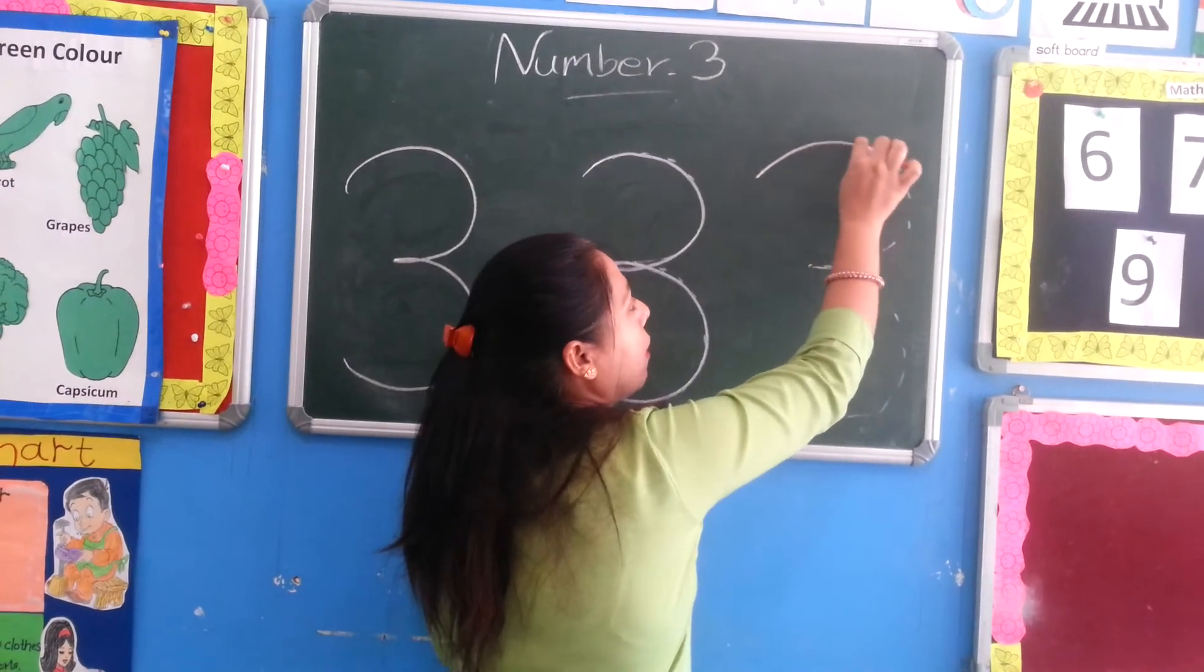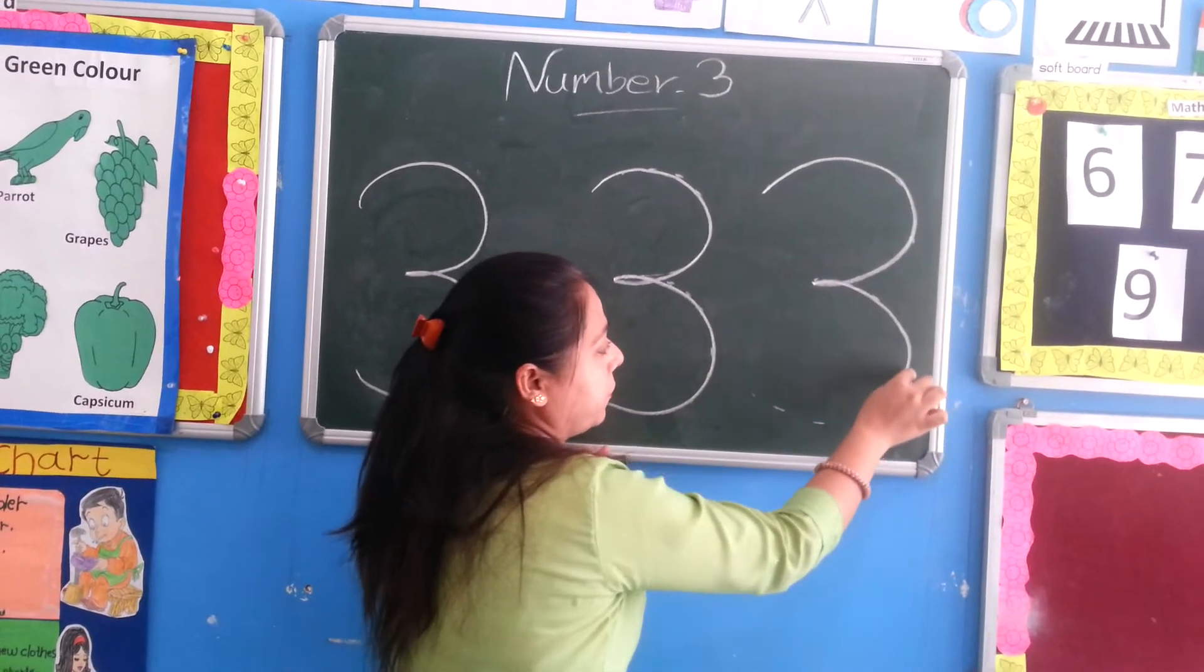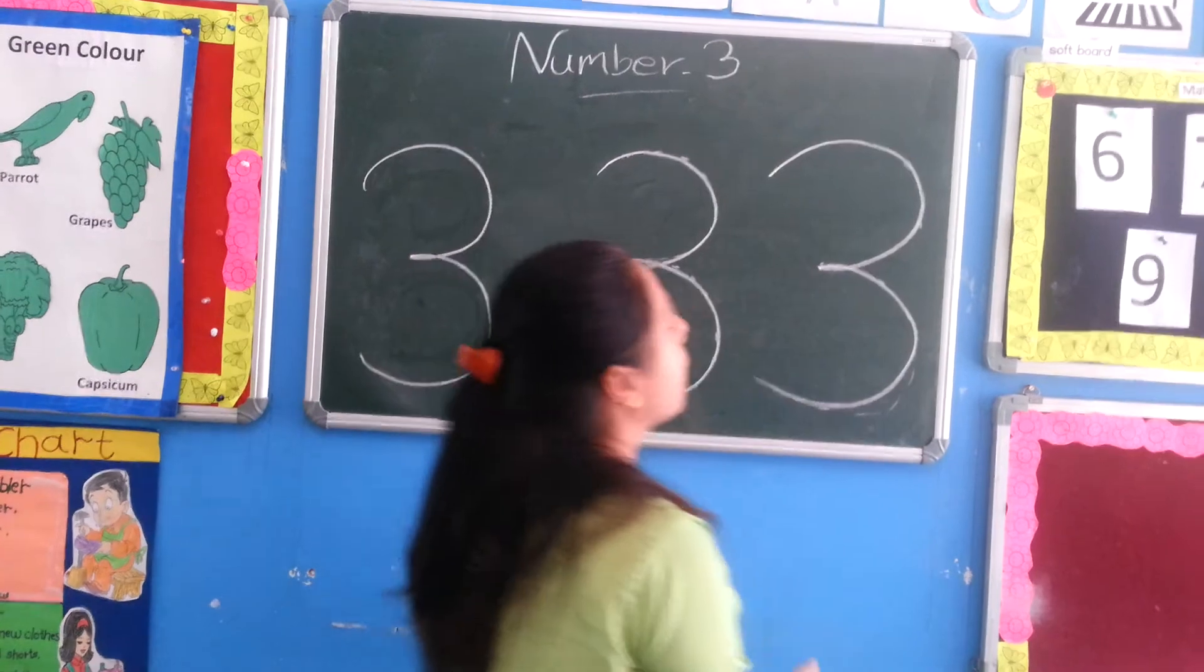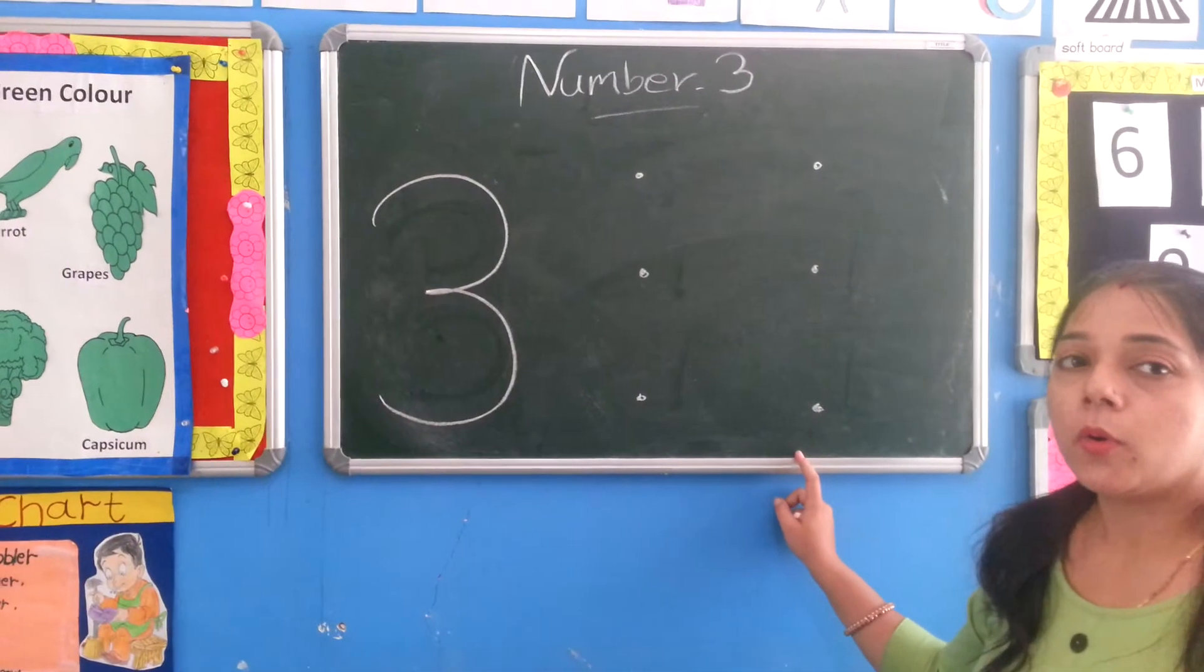Which number is this? One curve, two curves. This way we will make number 3.